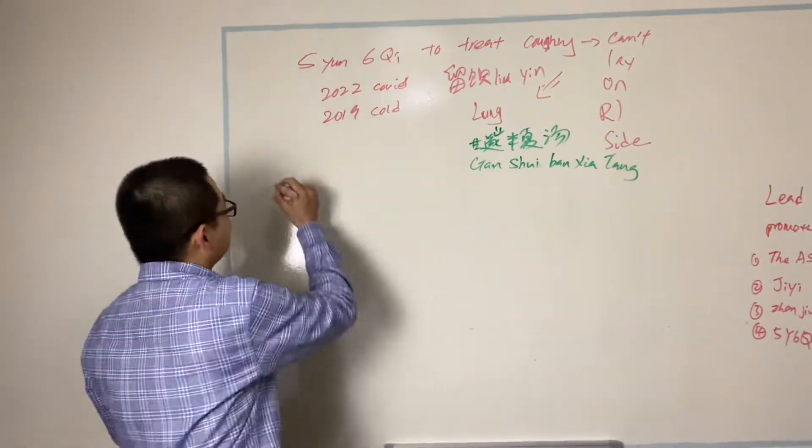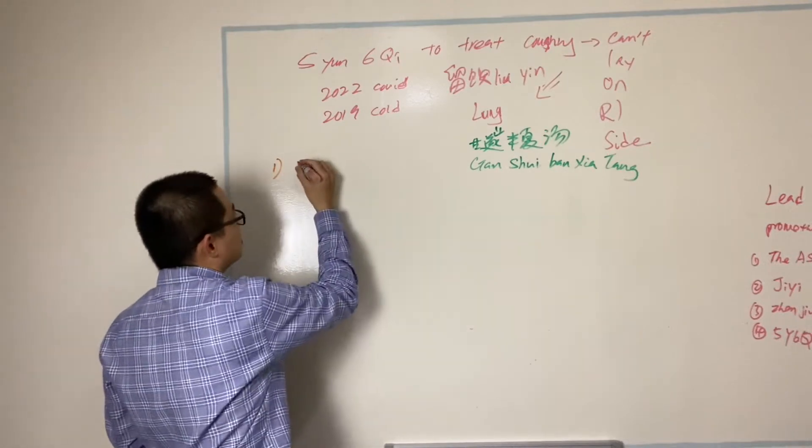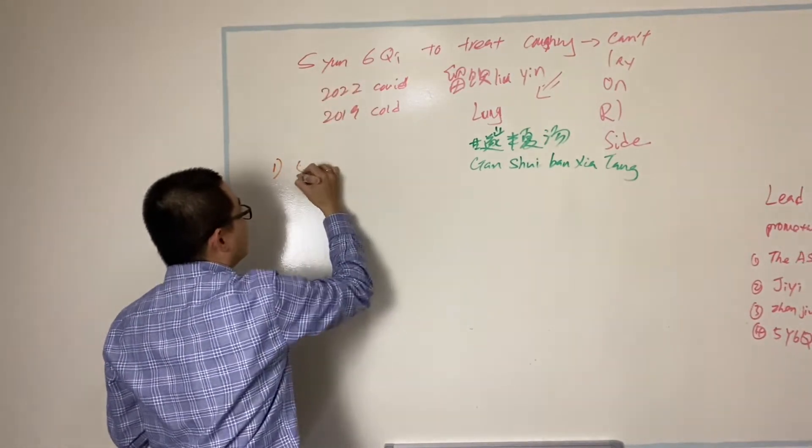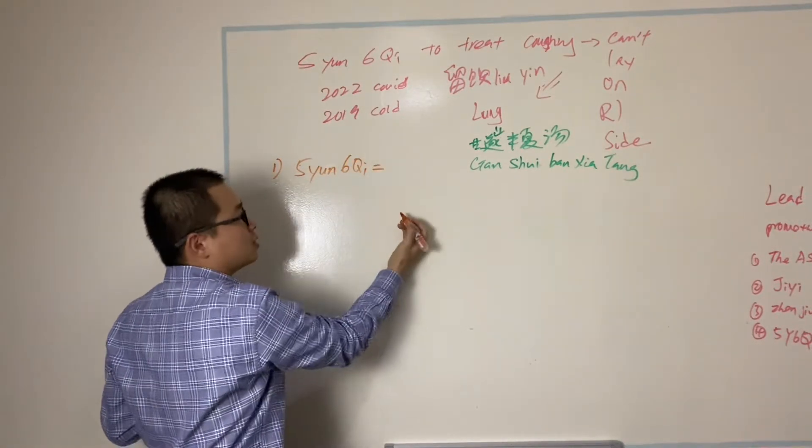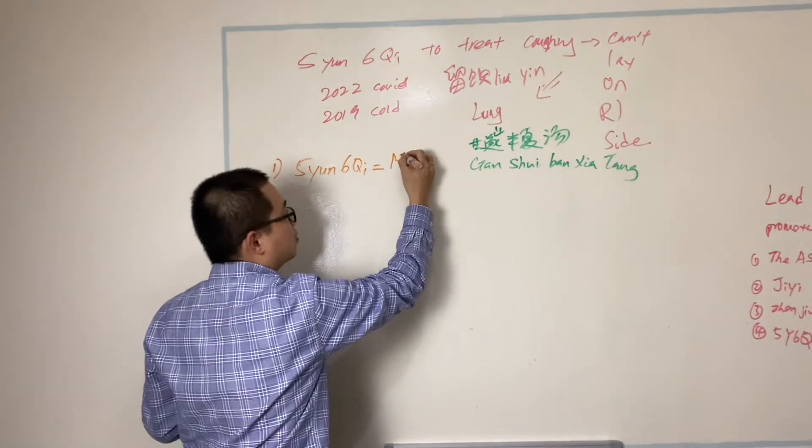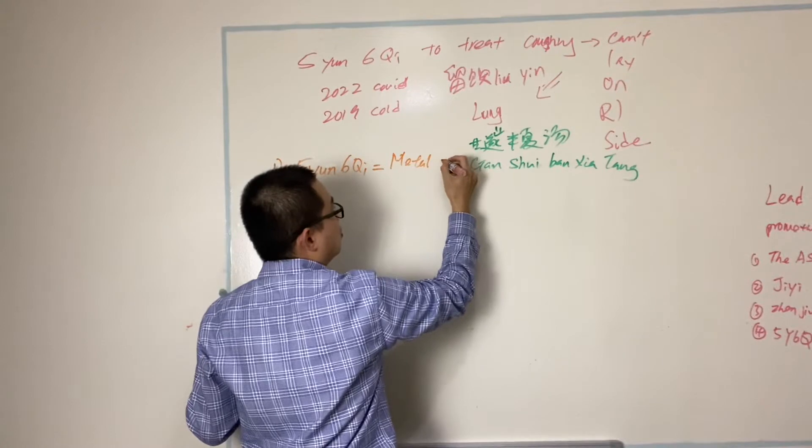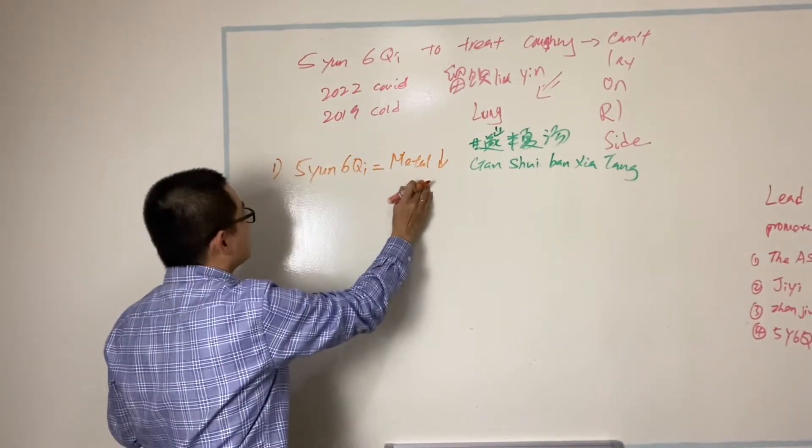My acupuncture one, which is make a diagnosis. My diagnosis from Wu Yun Liu Qi, it's called Metal Metal Weak Deficiency. This is my diagnosis.